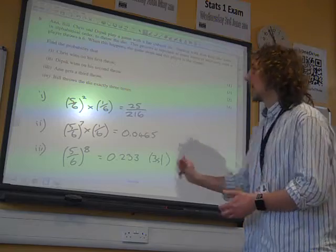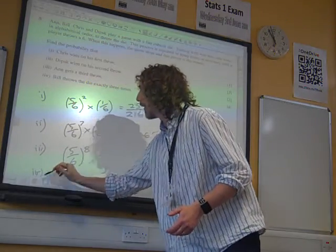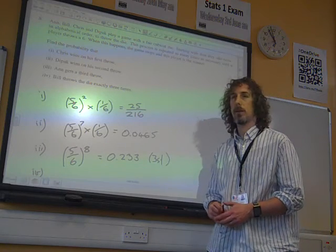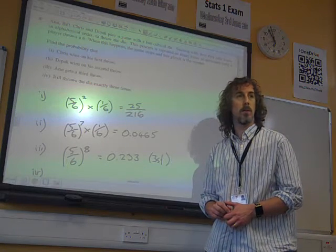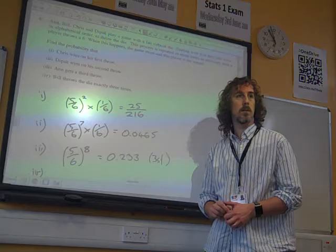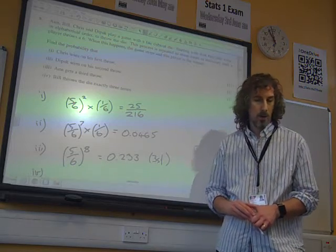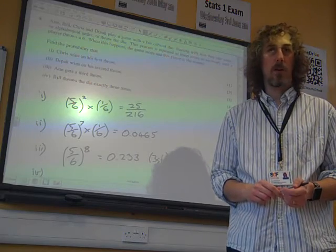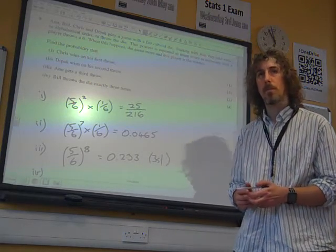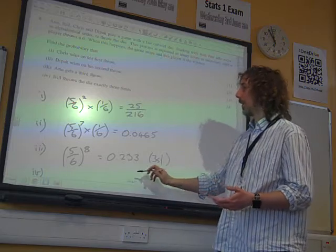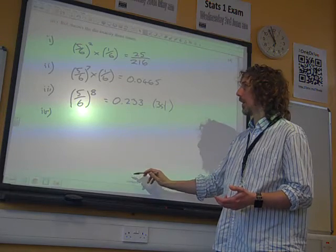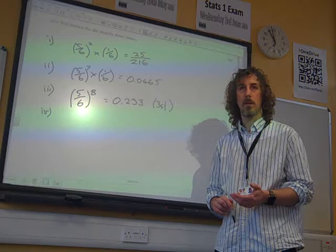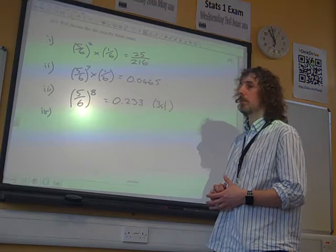Right, final bit. What's the probability that Bill throws the die exactly three times? There's quite a few ways that that could happen. What are you thinking, Richard? There are probably three ways. Are there only three ways? I think there's maybe more than three ways that it could happen. If he's going to throw it exactly three times, well, he could be successful on his third throw.